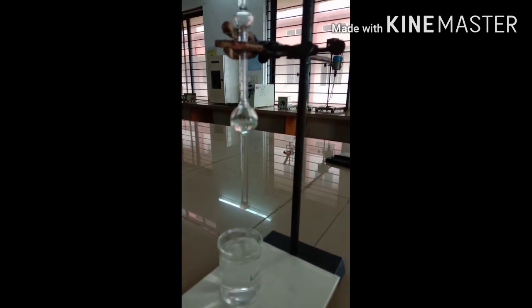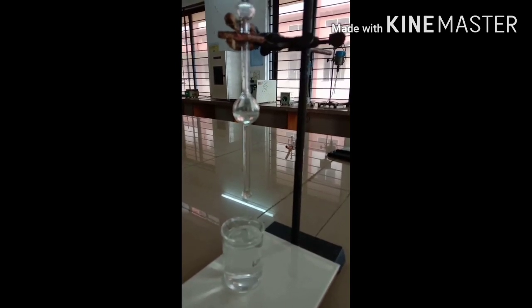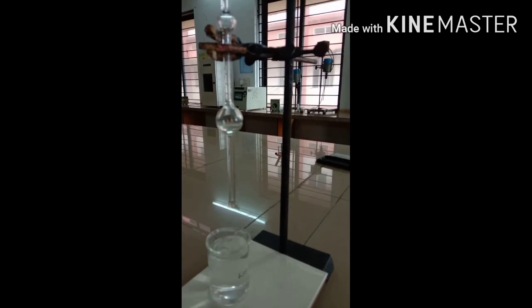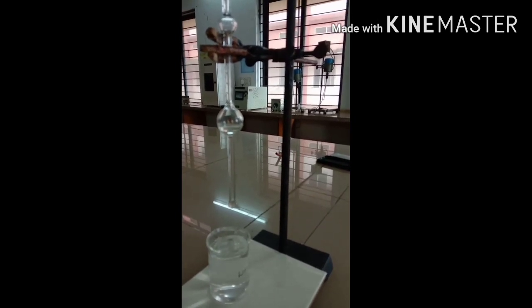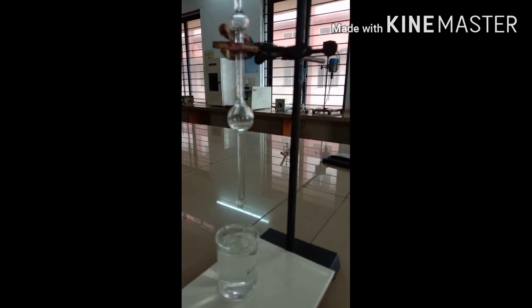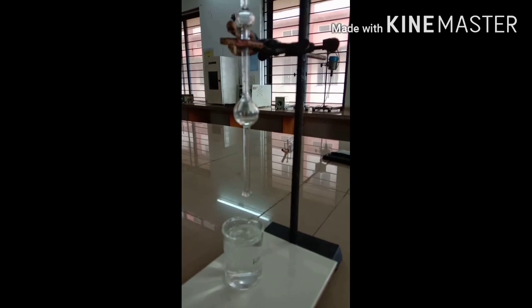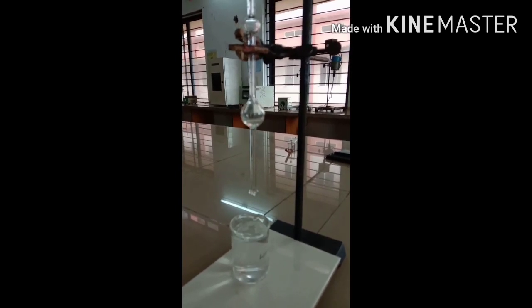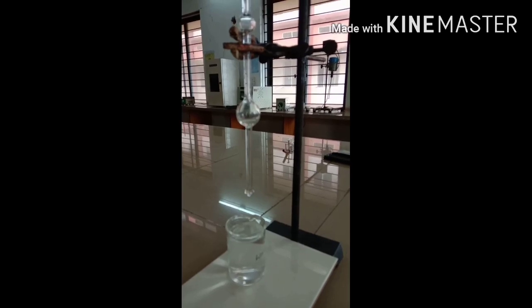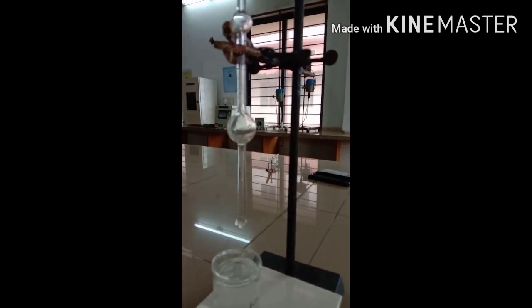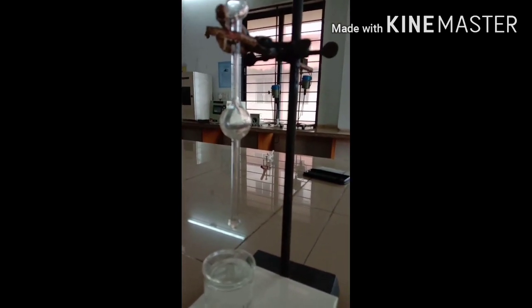Go on counting the drops. Here water is used as a reference liquid for which we know the surface tension. Count the drops till it comes to the lower mark. Repeat once again till you get a concordant value. You have to get the same number of drops.